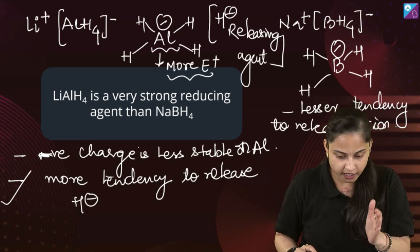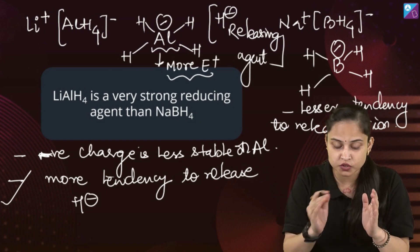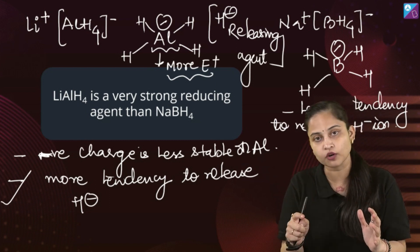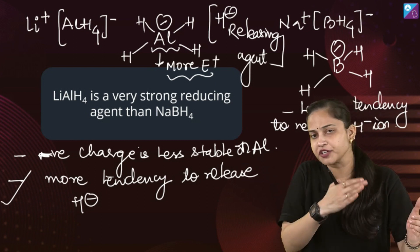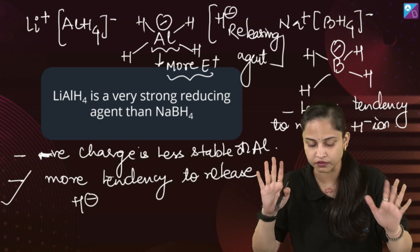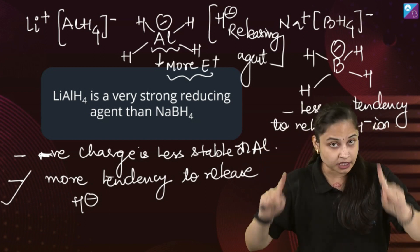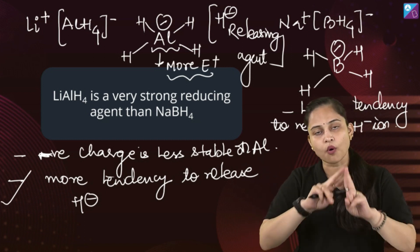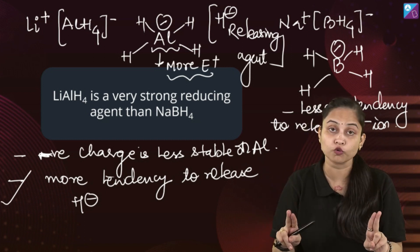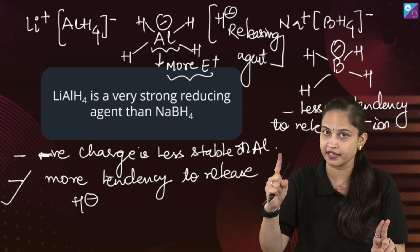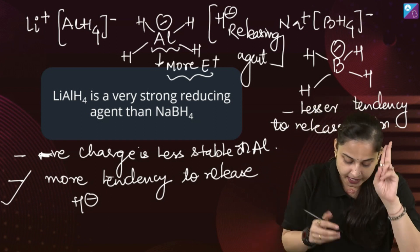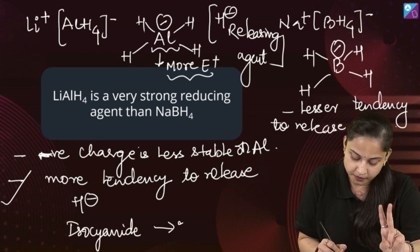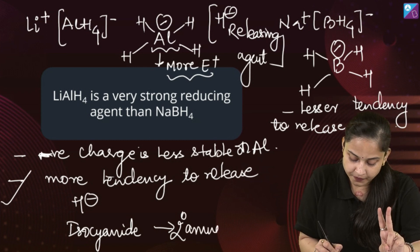Talking about lithium aluminum hydride, it reduces all the oxygen-containing groups into primary alcohols, except ketones, wherein it reduces ketones to secondary alcohols. Lithium aluminum hydride is a less selective reducing agent. It also reduces all nitrogen-containing groups into primary amines, except it reduces isocyanide to a secondary amine.